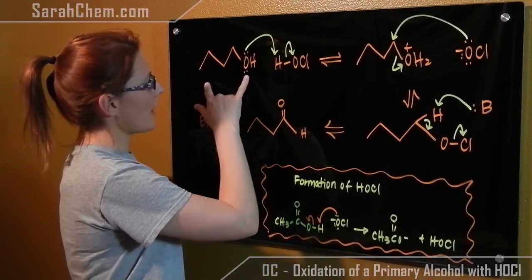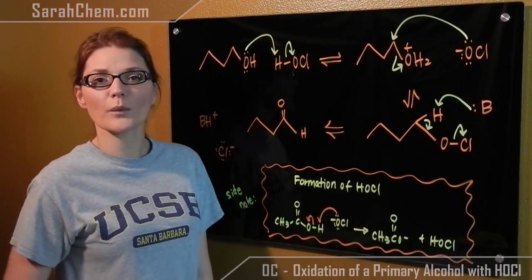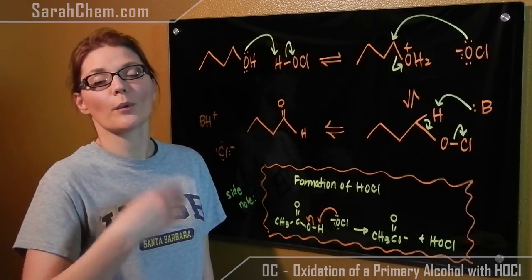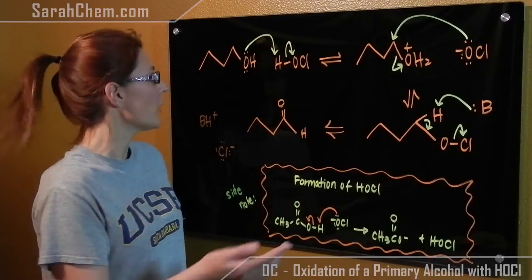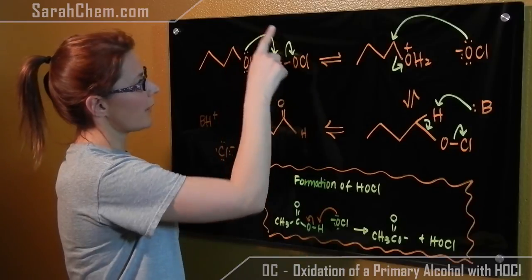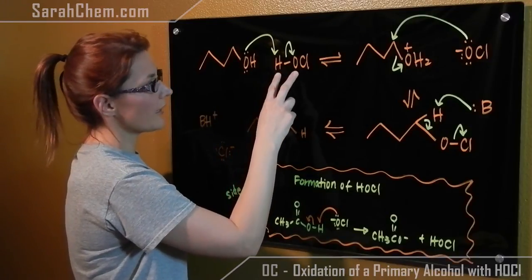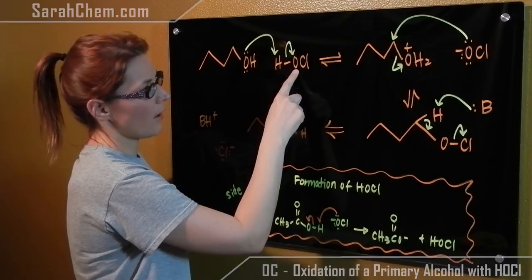So over here we have our primary alcohol. As always, the first step is to activate that OH group so that we're able to react with it later. The OH with its lone pairs will come and attack this hydrogen, breaking this bond and causing those electrons to shift onto the oxygen.